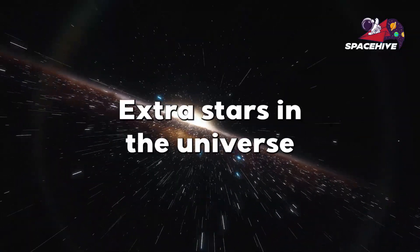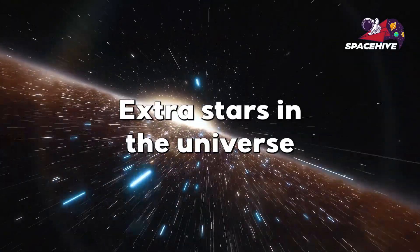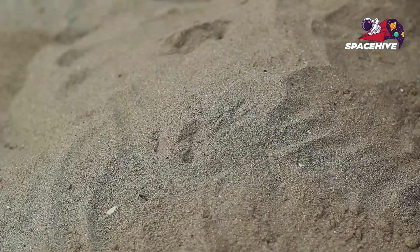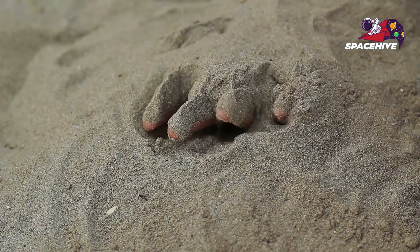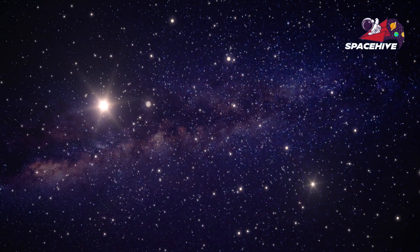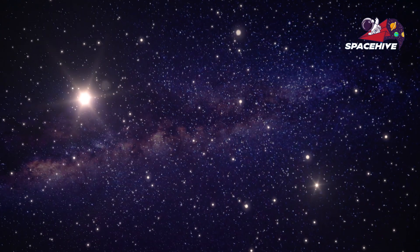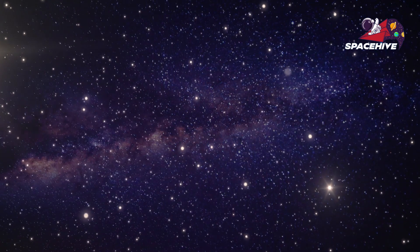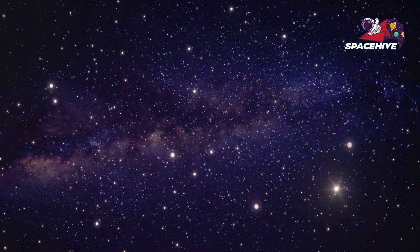Number 3. Did you know that there are more stars in the universe than there are grains of sand on all the beaches on Earth? Estimates put the number of stars in the observable universe at around 100 billion trillion, that's ten followed by 22 zeros. And while that might seem like a lot, it's worth noting that the universe is still mostly empty space.